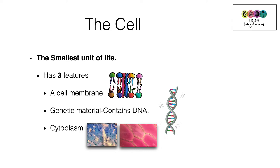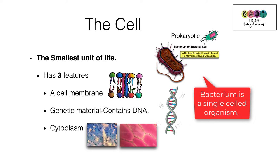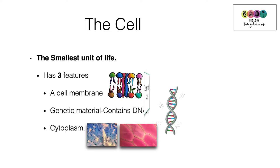Take, for example, a bacterium — it's made up of one cell. Cells have three features: they have cell membranes, they have genetic material — DNA, deoxyribonucleic acid — and cells contain cytoplasm.